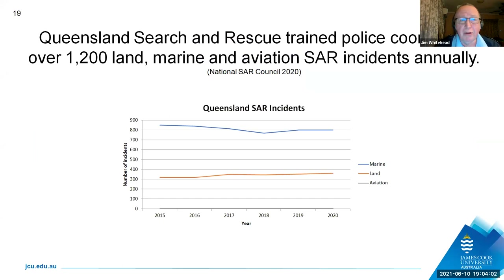Looking only at Queensland — I initially started this for Australia-wide but there were issues gathering data from other states, so working within the service it was far easier to gather Queensland data. We do about 1,200 to 1,400 SAR incidents a year. Maritime incidents are about twice as many as land ones. The gap between them used to be larger but is slowly closing, and aviation incidents are relatively few in number, thankfully.